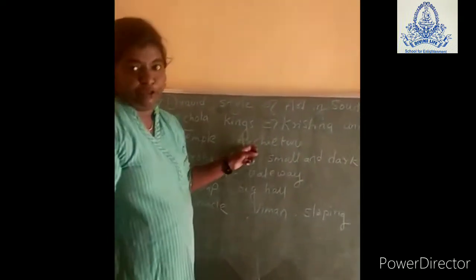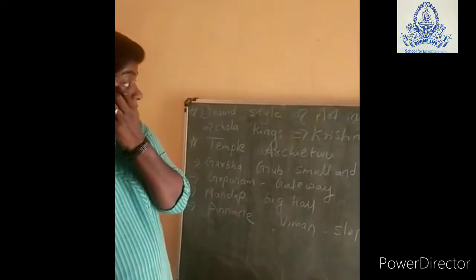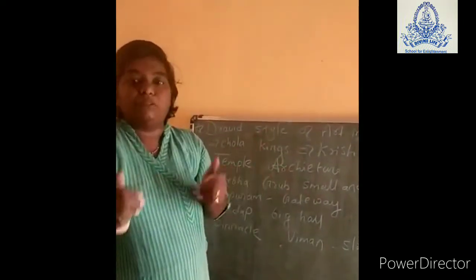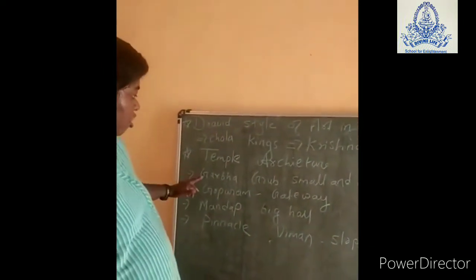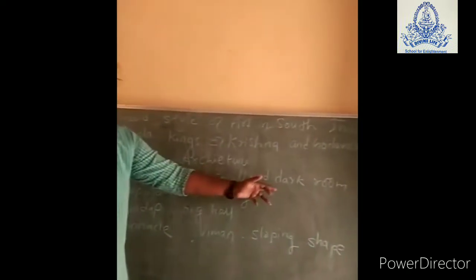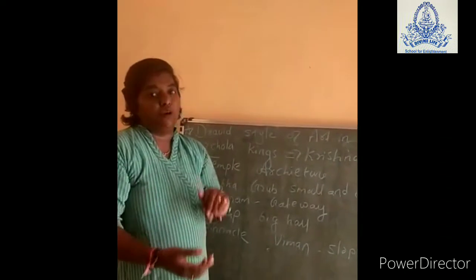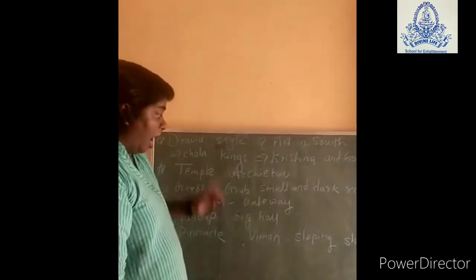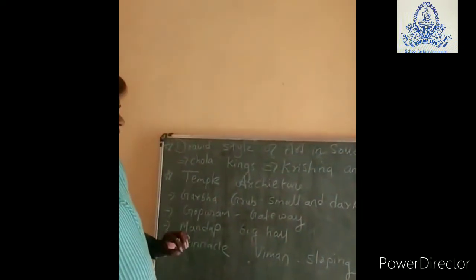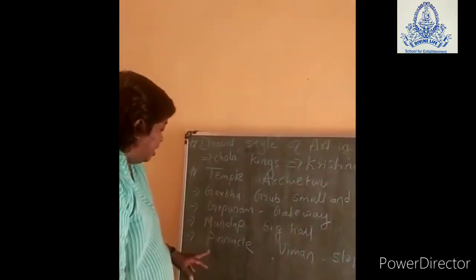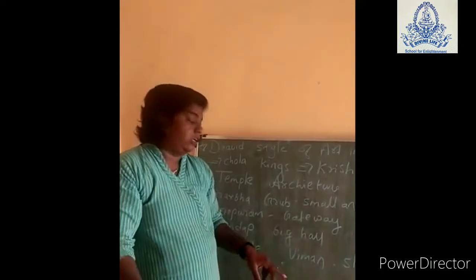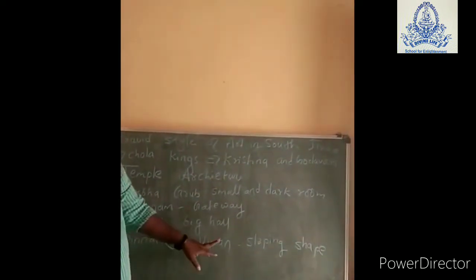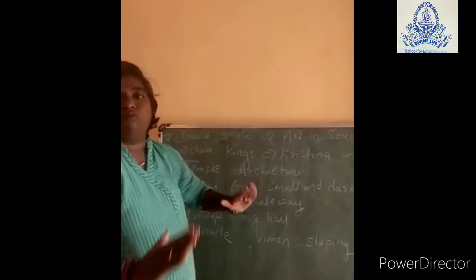Let us move on to the next topic, which is temple architecture. Temple architecture is a very important topic — how the temple is made and what are its different parts. First is Garbha griha, which is a small and dark rectangular room in which the idol of God is kept. Second is Gopuram, which is the gateway. The Meenakshi temple of southern India has the best Gopuram in our country. Then there is Mandap, which is a big hall in front of the Gopuram where people sit. After that, the Pinnacle, which is the Shikhar, and then Viman, which is the sloping area of the temple.